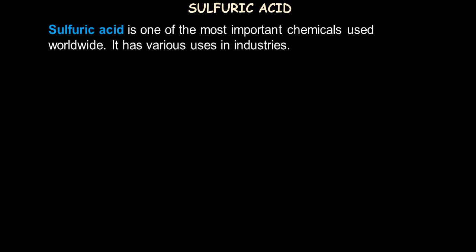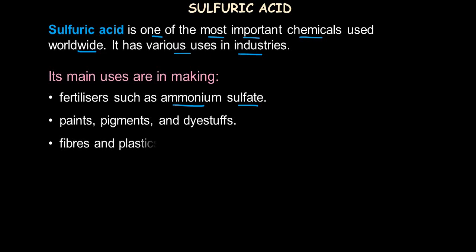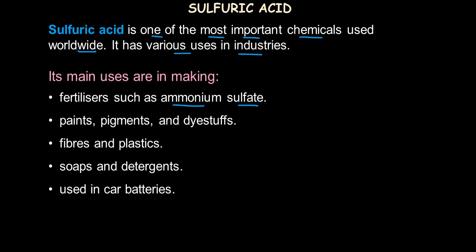Sulfuric acid is one of the most important chemicals used worldwide because it has various uses in many industries. The most important use is in making fertilizers, such as ammonium sulfate. It is also used in paints, pigments and dye stuffs, fibers and plastics, soaps and detergents, and one of its most important uses is in car batteries, where sulfuric acid is used directly to produce power.